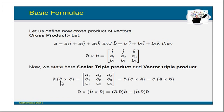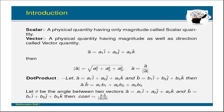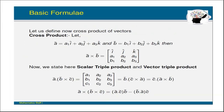The vector triple product is defined as a-bar cross (b-bar cross c-bar), which equals (a-bar dot c-bar)·b-bar minus (b-bar dot a-bar)·c-bar. Keep in mind that the dot product of two vector quantities is a scalar quantity, while the cross product of two vector quantities is a vector quantity.